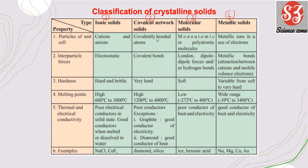The constituent particles of ionic solids are cations and anions. Covalent network solids are created by covalently bonded atoms. Molecular solids are created by monatomic or polyatomic molecules. Metallic solids are created by metallic ions in a sea of electrons. Regarding inter-particle forces: ionic solids have electrostatic force, covalent solids have covalent bonds, molecular solids have London force, dipole-dipole force, or hydrogen bonds, and metallic solids have metallic bonds.